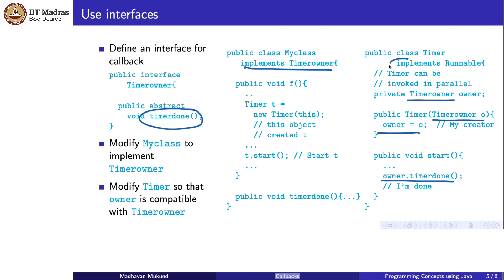There is one piece of code in the timer definition: it implements an interface called runnable. This is an internal Java interface we will learn about later. This is what allows the timer to run in parallel. We have not discussed exactly what runnable means — it is not relevant to this discussion right now. You just have to take it on faith that if timer implements runnable, you can actually launch this timer in parallel, so there is some meaning to this calling back.